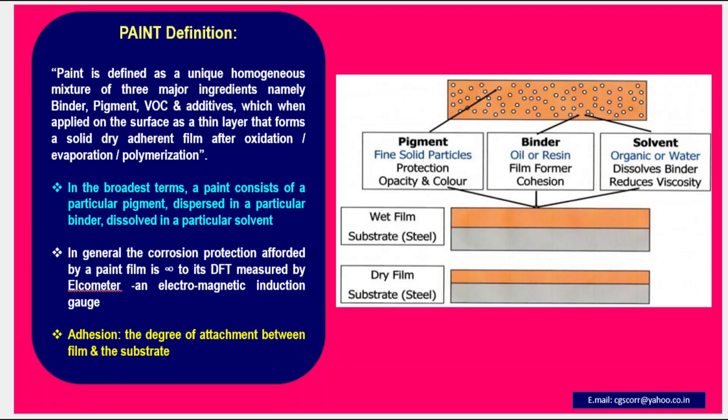The wet film of the paint applied on a steel substrate, you can see pictorially, and the dry film on a steel substrate after getting dried. There is a vast difference between wet film and dry film.